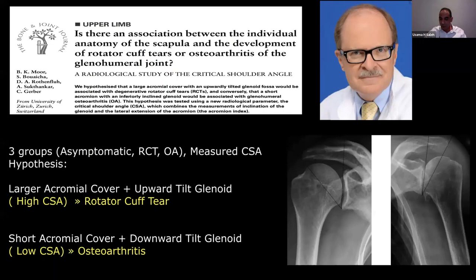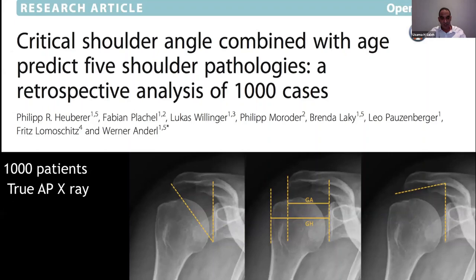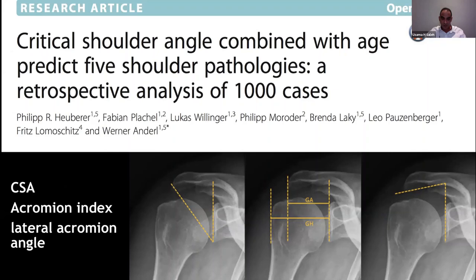The same group of Gerber then looked at the reliability of the critical shoulder angle and compared it to other radiological parameters — the acromion index, lateral downsloping of the acromion, and the Bigliani classification — and found the critical shoulder angle is most relevant to rotator cuff pathology and degeneration. A group from Germany also looked at 1,000 patients comparing critical shoulder angle, acromion index, and lateral acromion angle, and found the same result. That is why there are now hundreds of articles on the critical shoulder angle in the literature.